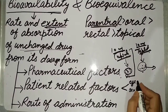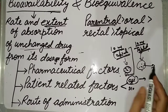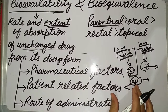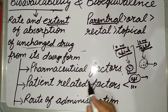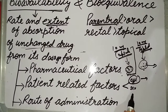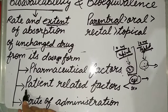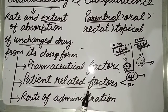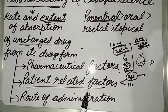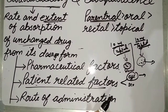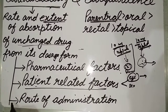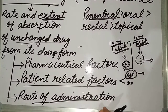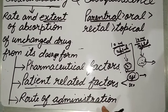For example, if the patient is old, then they will depict lower bioavailability. If the patient is of younger age, they will depict higher bioavailability. So patient-related factors can also affect the bioavailability of the drug. Third, if the dosage is the same, then the route of administration can also affect the bioavailability.